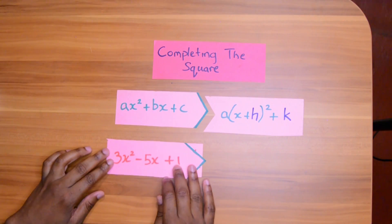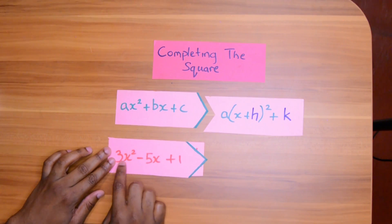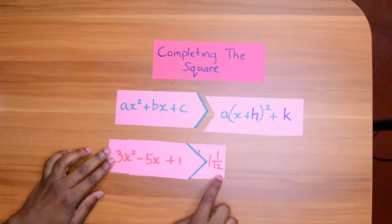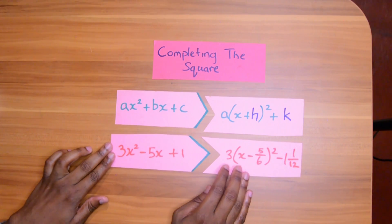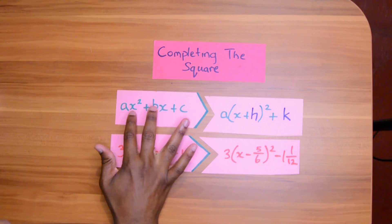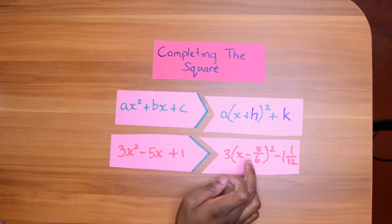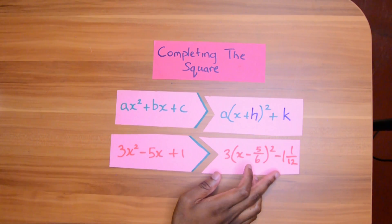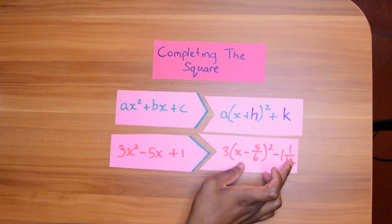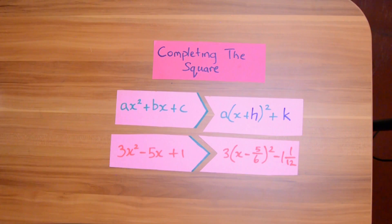For example, if we had this quadratic equation, we want to change it — this is the answer — we want to change it to look like this. Wouldn't it be great if we had a formula for h and k based on A, B, and C? So like for negative 5 and 6, if I could use these numbers to just get the answer for k one time in the example.